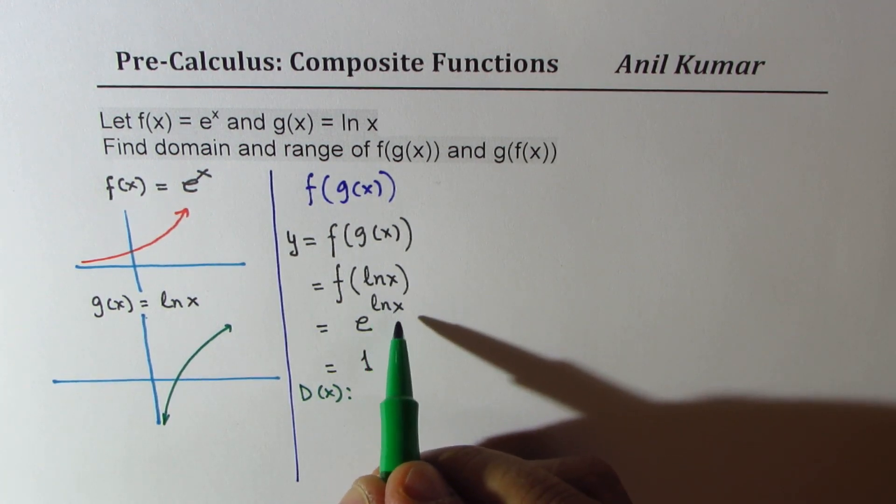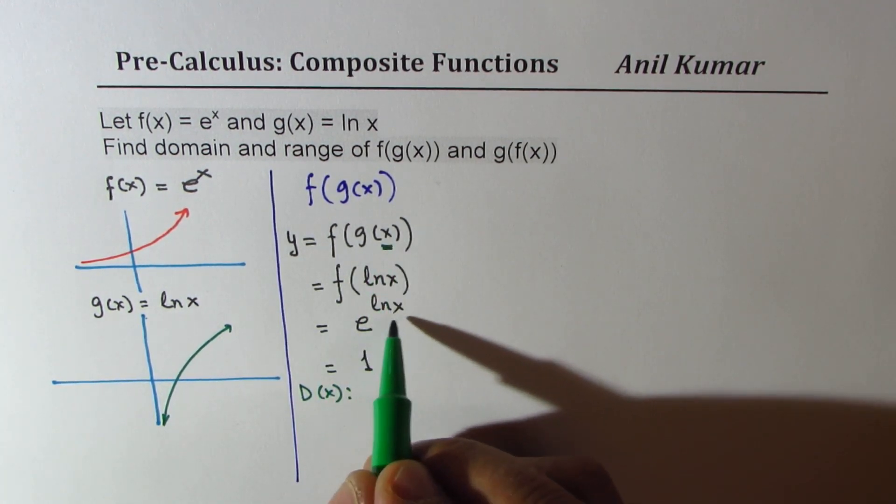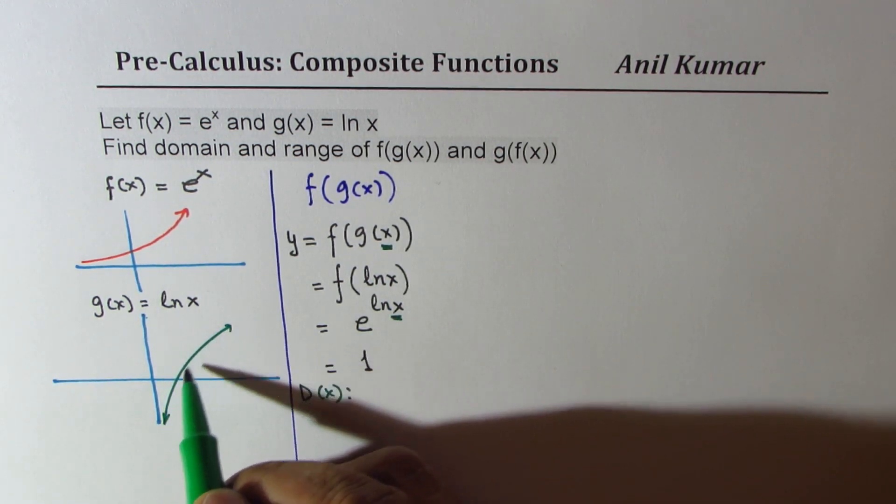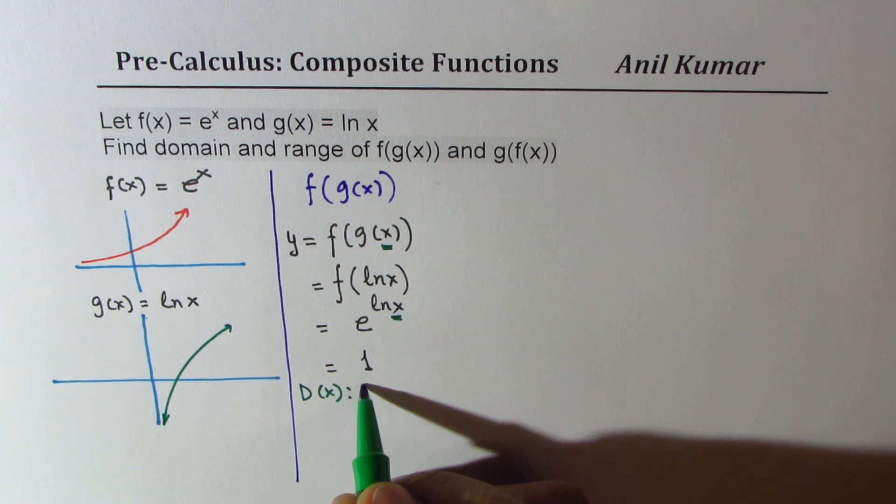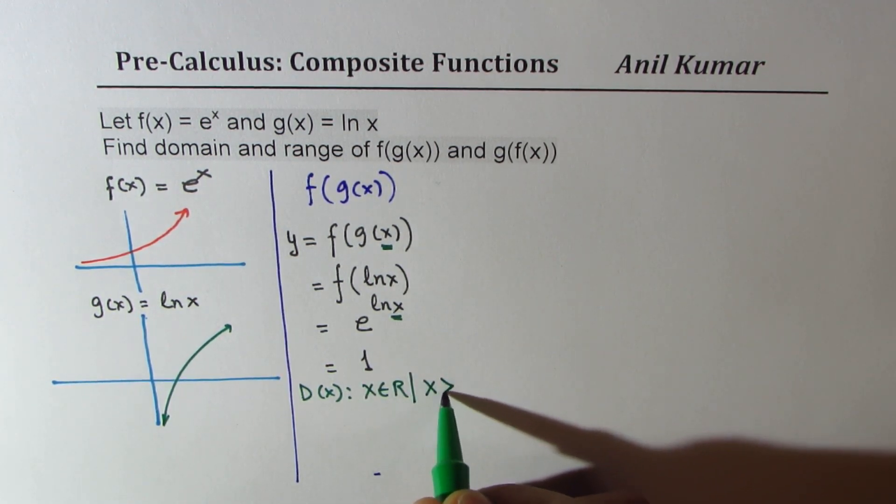Domain is decided by the inside function, g(x), that is by this value of x. If you look into this graph, clearly we know that x belongs to real numbers, however x has to be greater than zero.